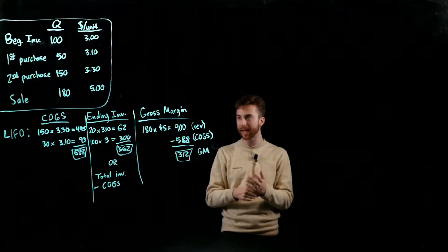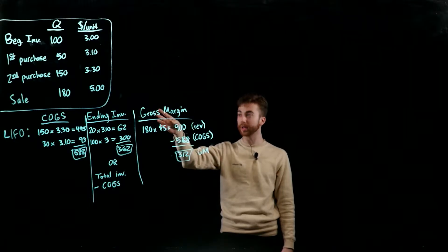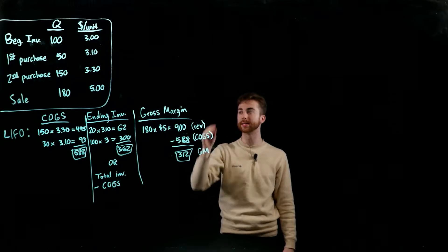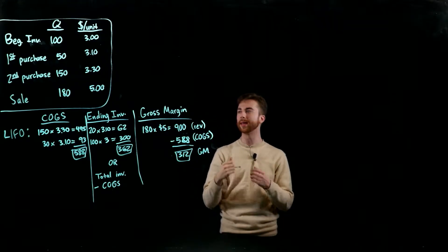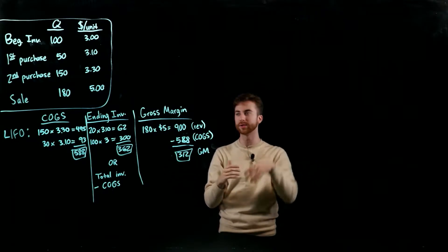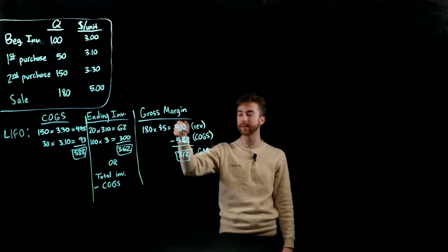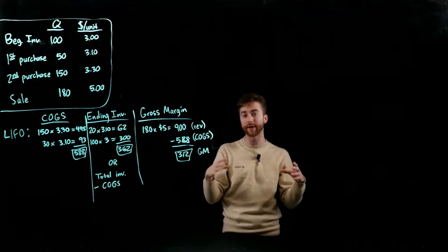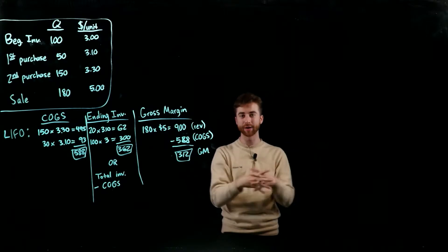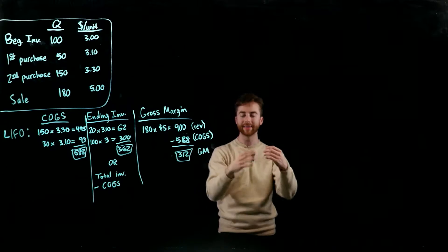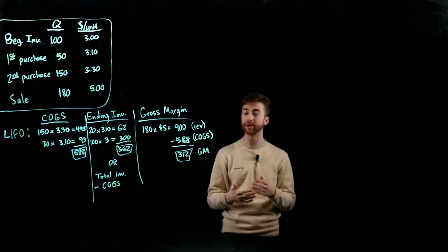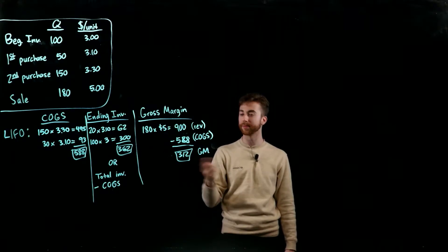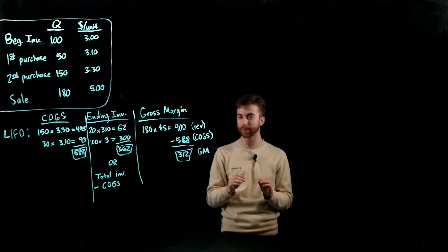For ending inventory under LIFO: we eliminated all 150 from the second purchase and 30 from the first purchase, leaving 20 units from the first purchase at $3.10 = $62, plus all 100 beginning inventory units at $3.00 = $300. Total ending inventory = $362. Again, you can verify by subtracting COGS from total inventory value. Gross margin: revenue of $900 minus LIFO COGS of $588 gives your gross margin.